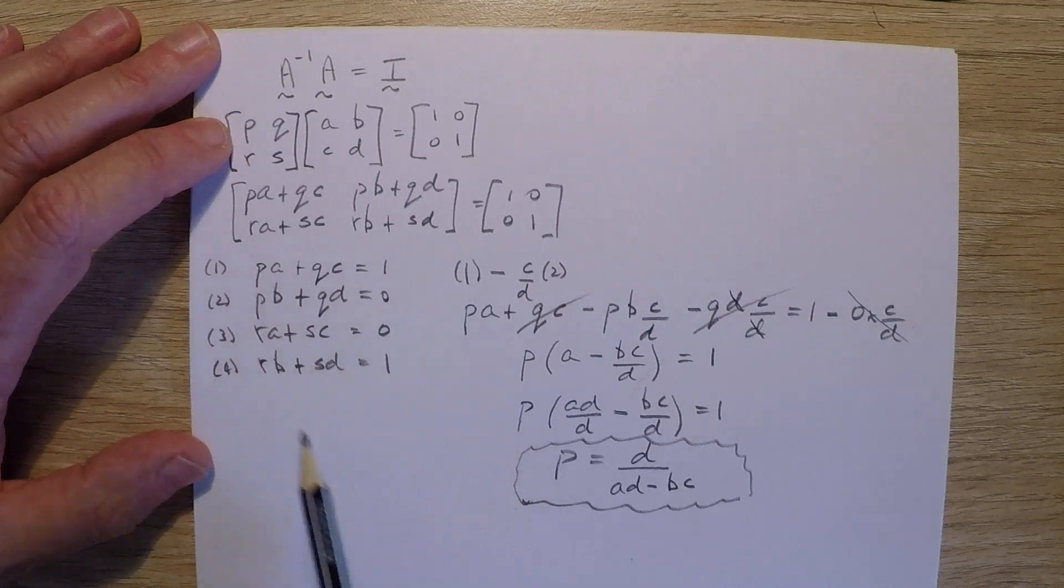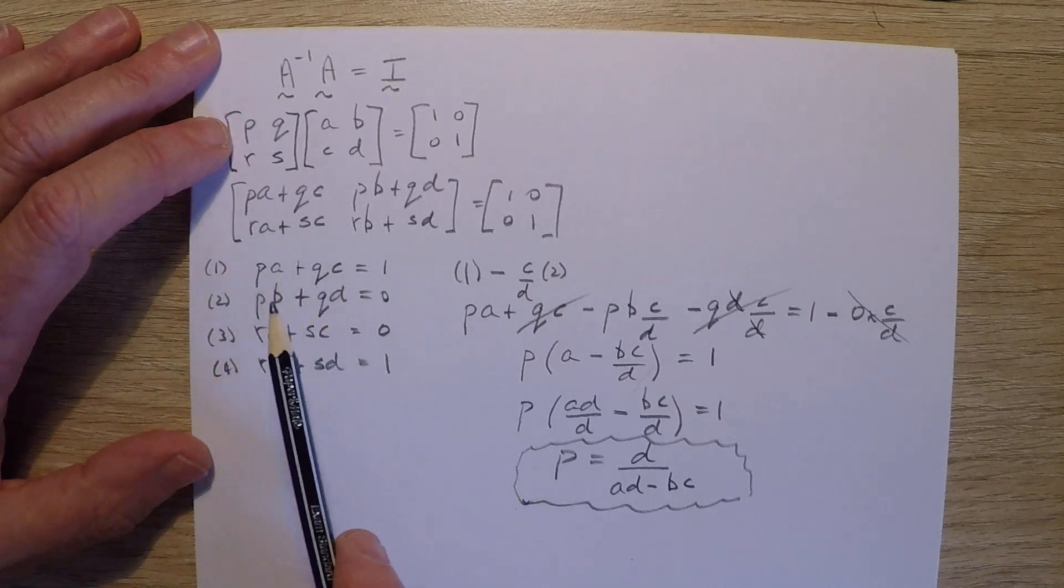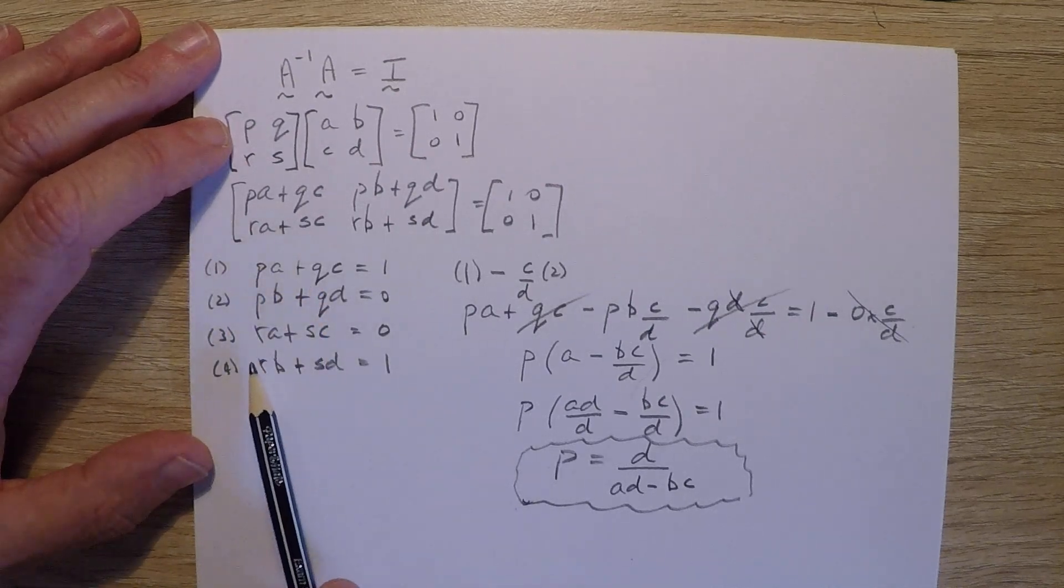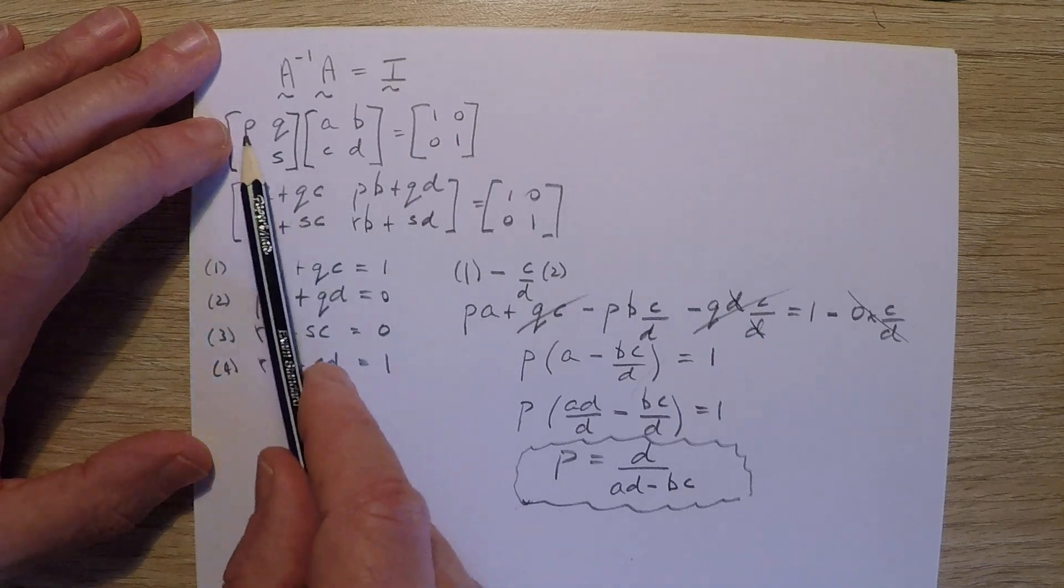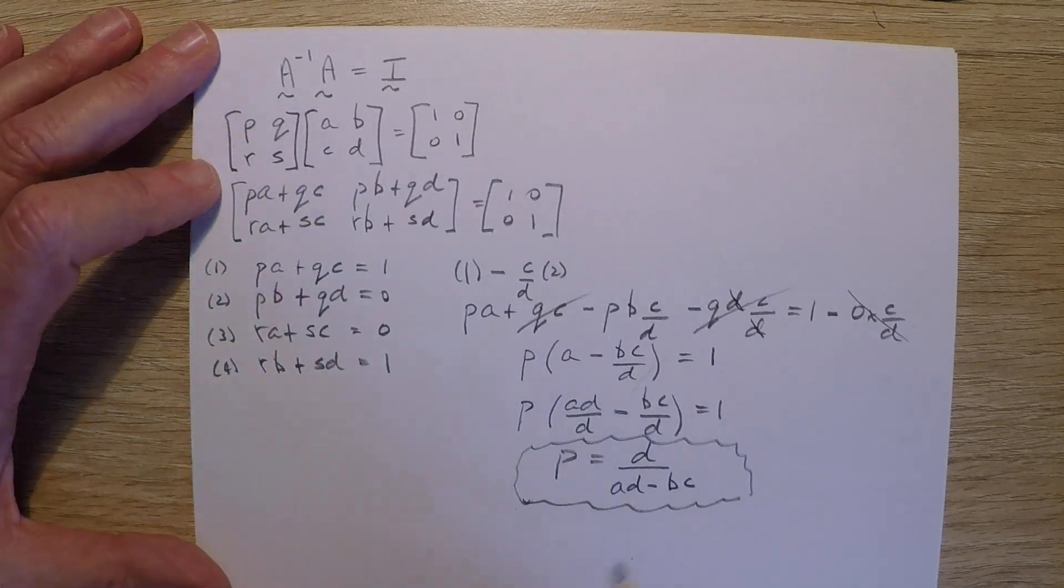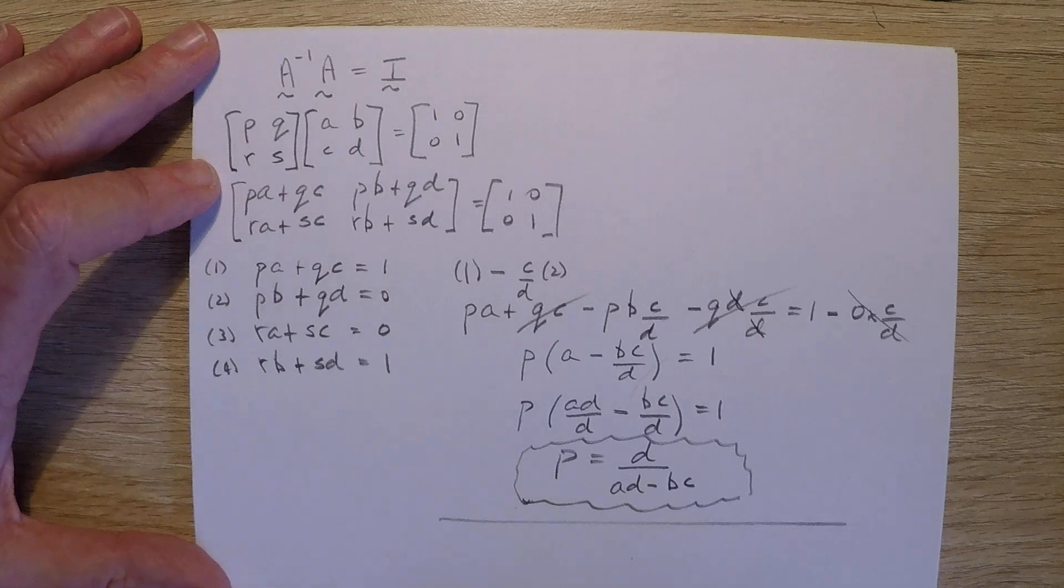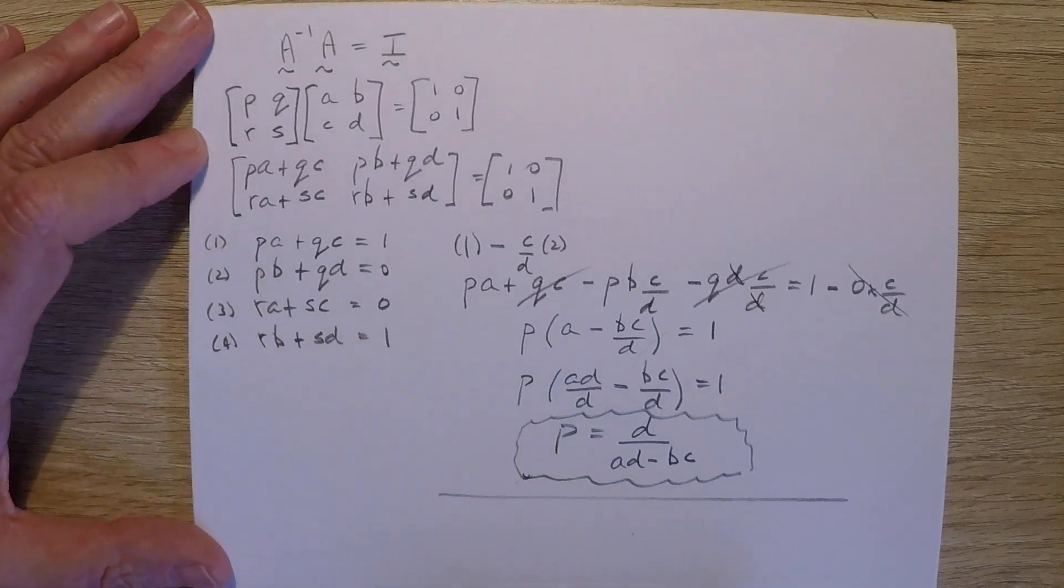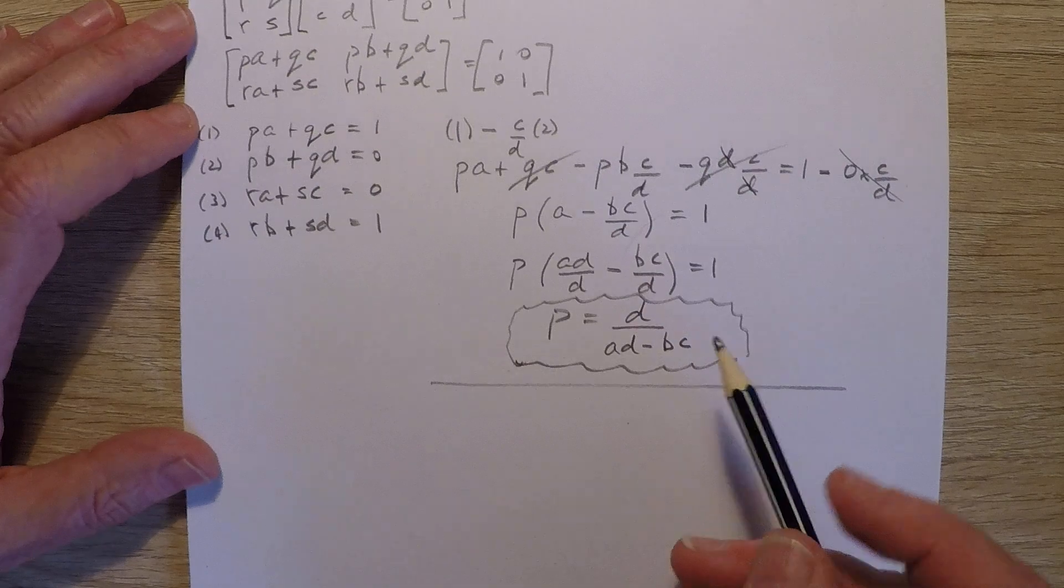So we do this again, eliminate P to solve for Q, then again twice here, and we'll have all four unknown values. So that's going to take a little bit of effort, but I can leave those ones for students as an exercise, it follows the same idea.